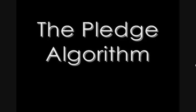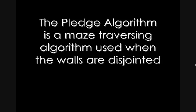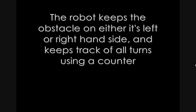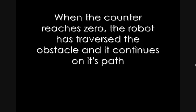In this tutorial we will be going over the pledge algorithm. The pledge algorithm is a maze traversing algorithm used when the walls are disjointed. The robot keeps the obstacle either on its left or right hand side and keeps track of all turns using a counter. Right turns increment the counter and left turns decrement the counter. When the counter reaches zero, the robot has traversed the obstacle and continues on its pathway towards the beacon.